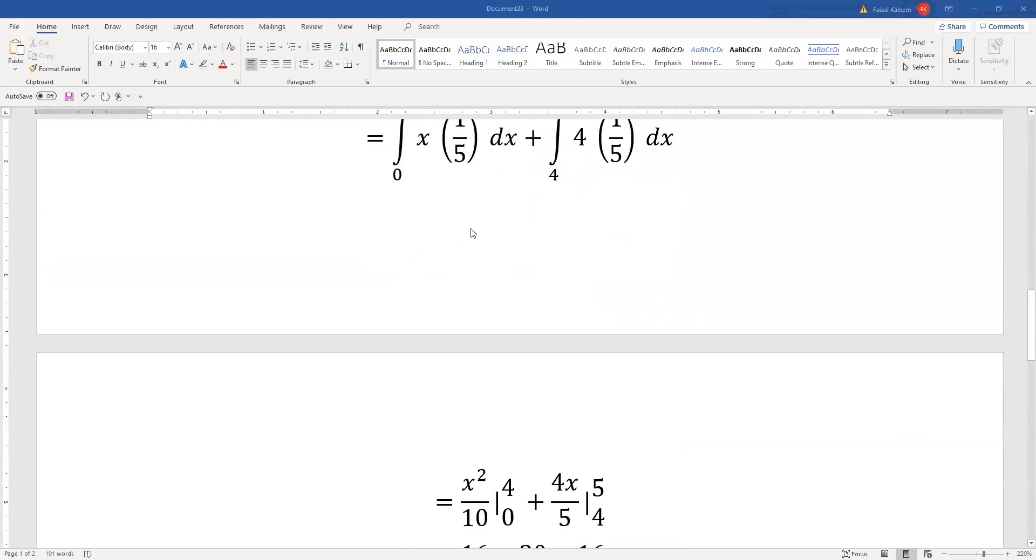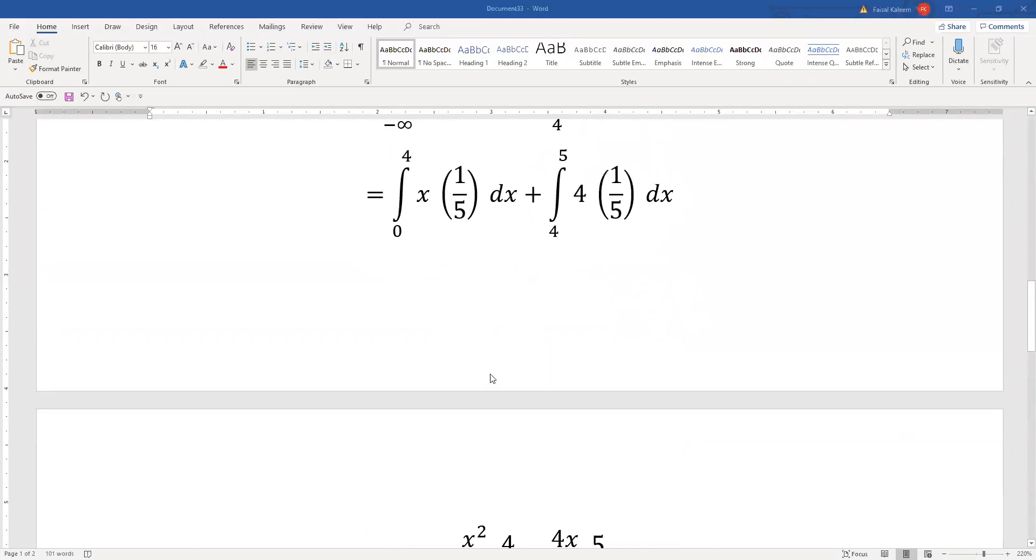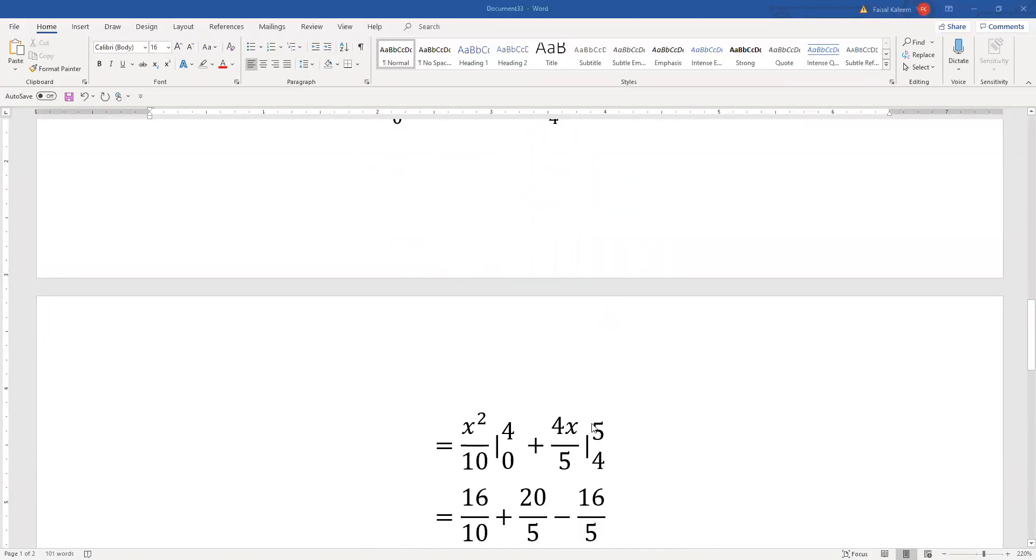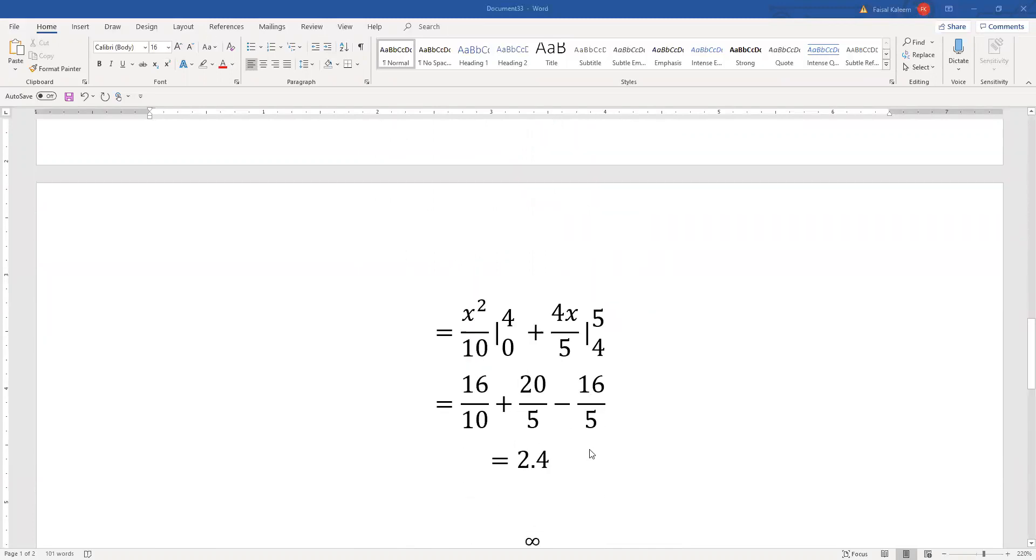The integral of this first one is x squared by 10, and the second one is 4x by 5. And eventually we get 2.4 for E[y].